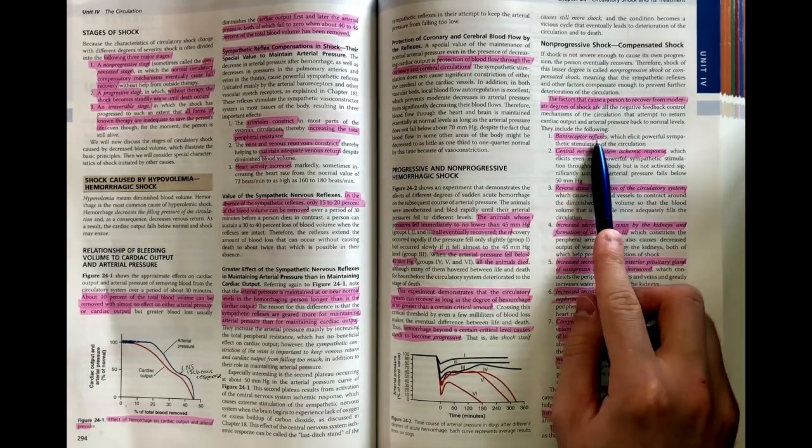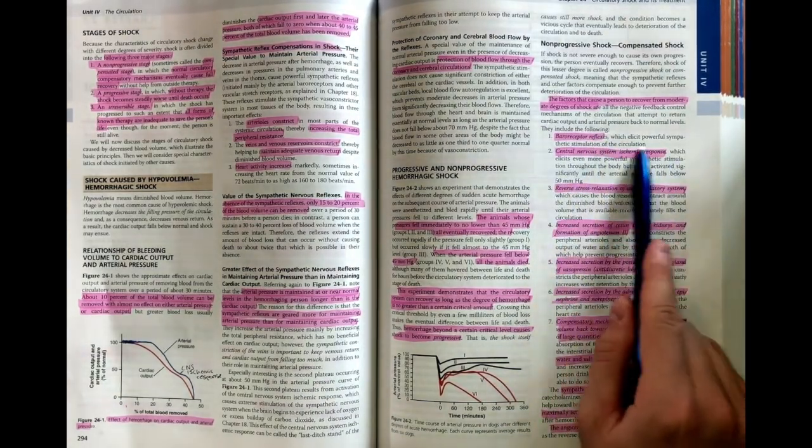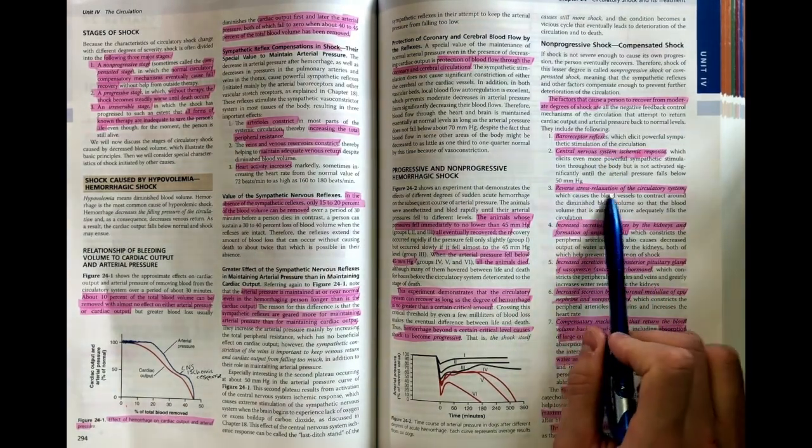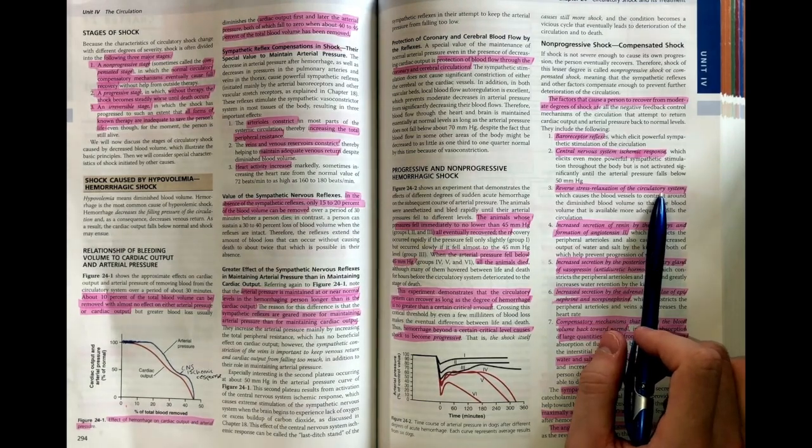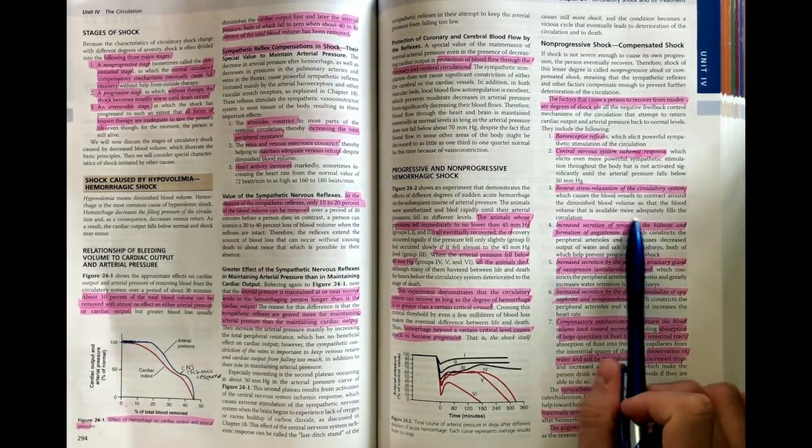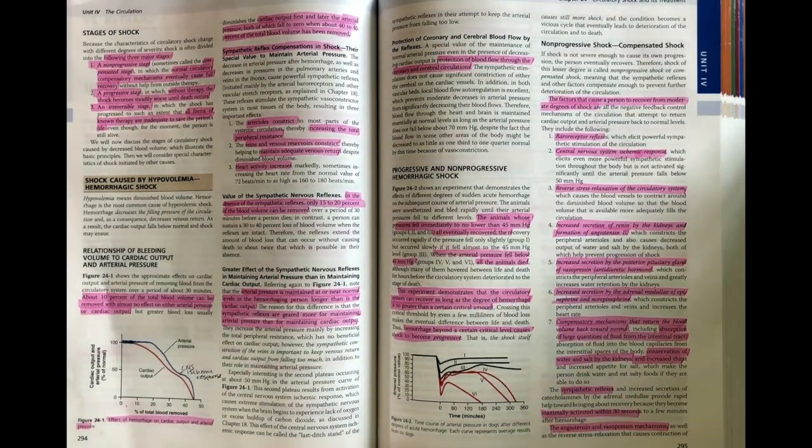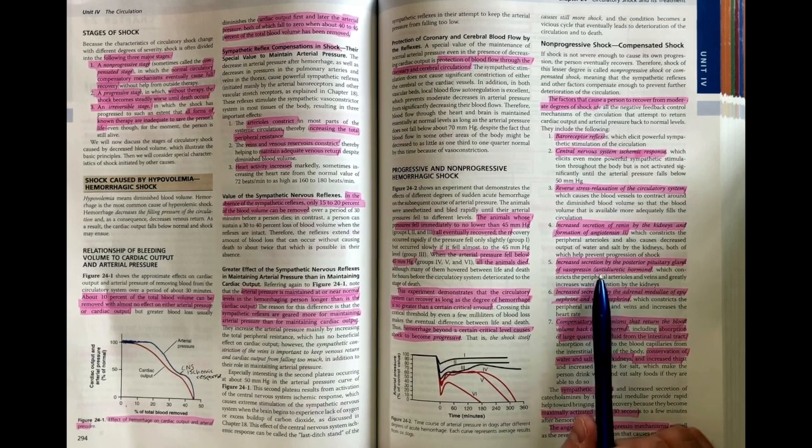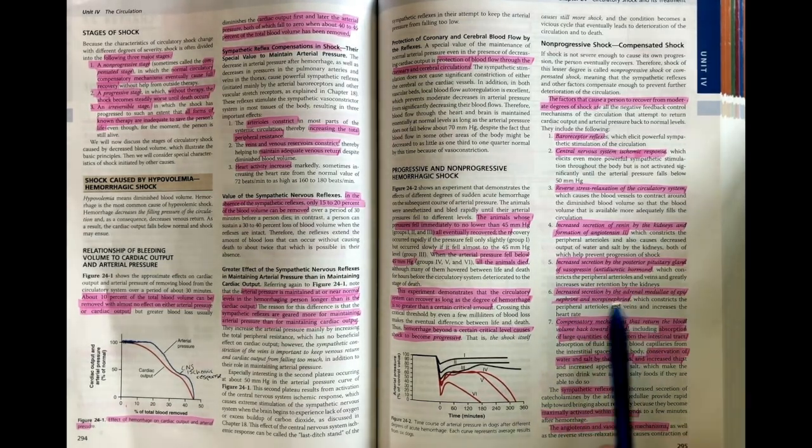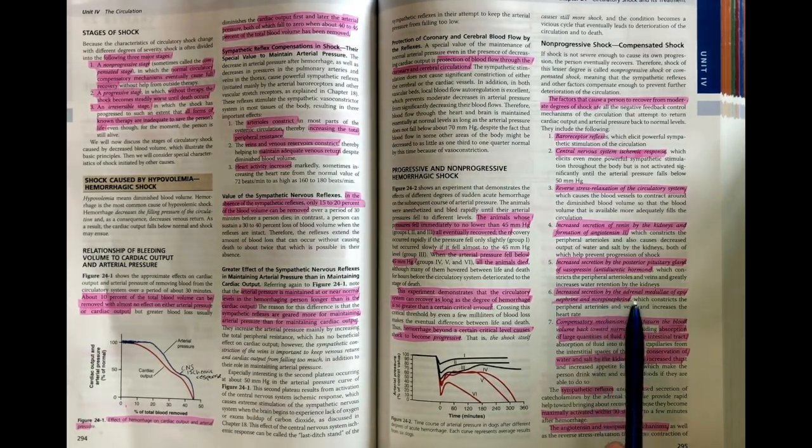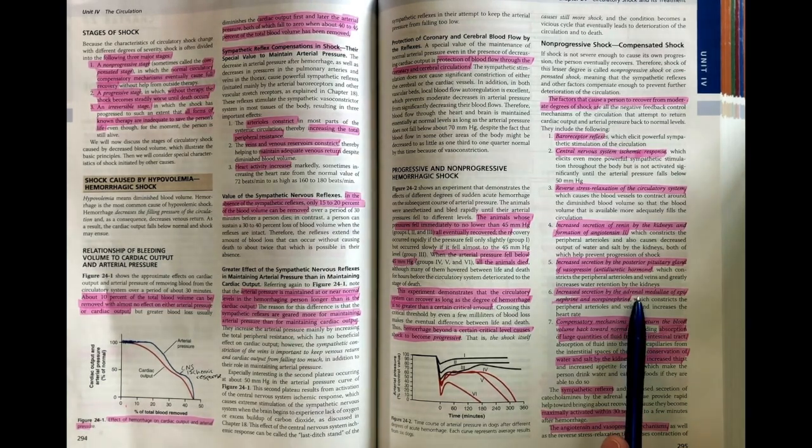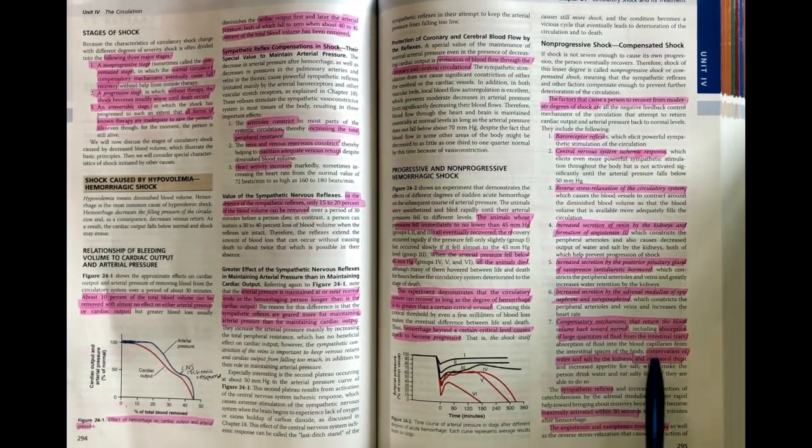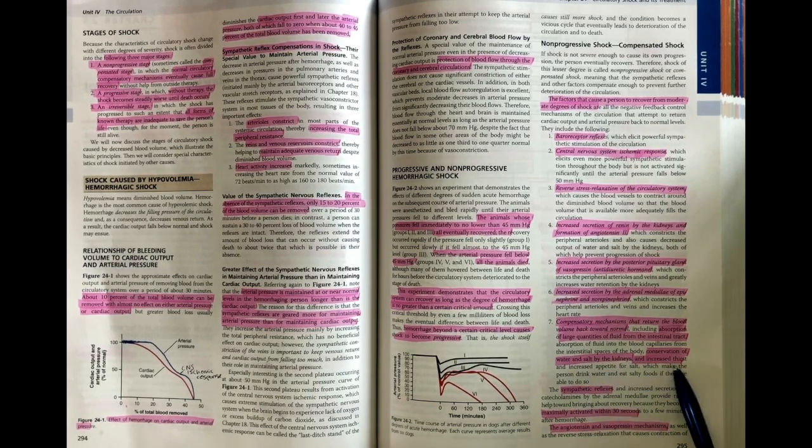The baroreceptor reflexes get initiated immediately. The central nervous system ischemic response is a powerful sympathetic stimulator which occurs once we start to have a real dramatic reduction in blood pressure. Reverse stress relaxation of the circulatory system means if the blood vessels suddenly lose their blood volume, they're going to constrict down. Increased secretion of renin activates our RAS cascade, producing angiotensin 2 to cause vasoconstriction and retain salt and water. Secretion of vasopressin or antidiuretic hormone helps to resorb more water and maintain our blood volume. Increased secretion of epinephrine and norepinephrine from our adrenal medulla helps to perform peripheral vasoconstriction and vasodilation of our coronary circulatory system. Then we have compensatory mechanisms that return volume back to normal—absorption of large amounts of fluid in the intestinal tract, conservation of water and salt by the kidneys, and increased thirst.